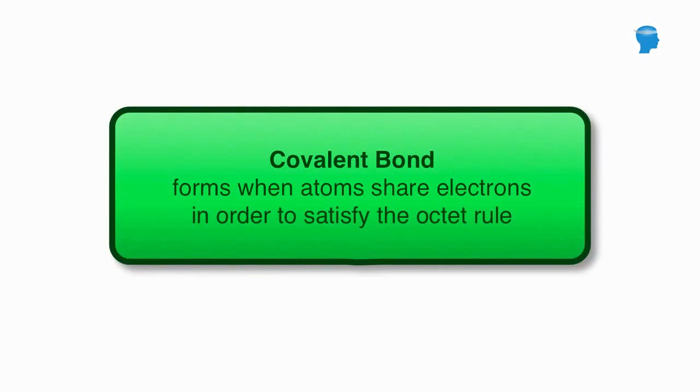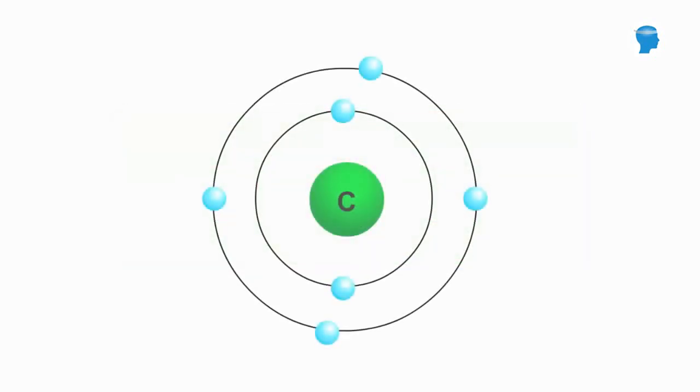A covalent bond is formed when atoms share electrons in order to satisfy the octet rule. For example, a carbon atom holds 4 electrons in its outer shell, but it would be much more stable with 8.